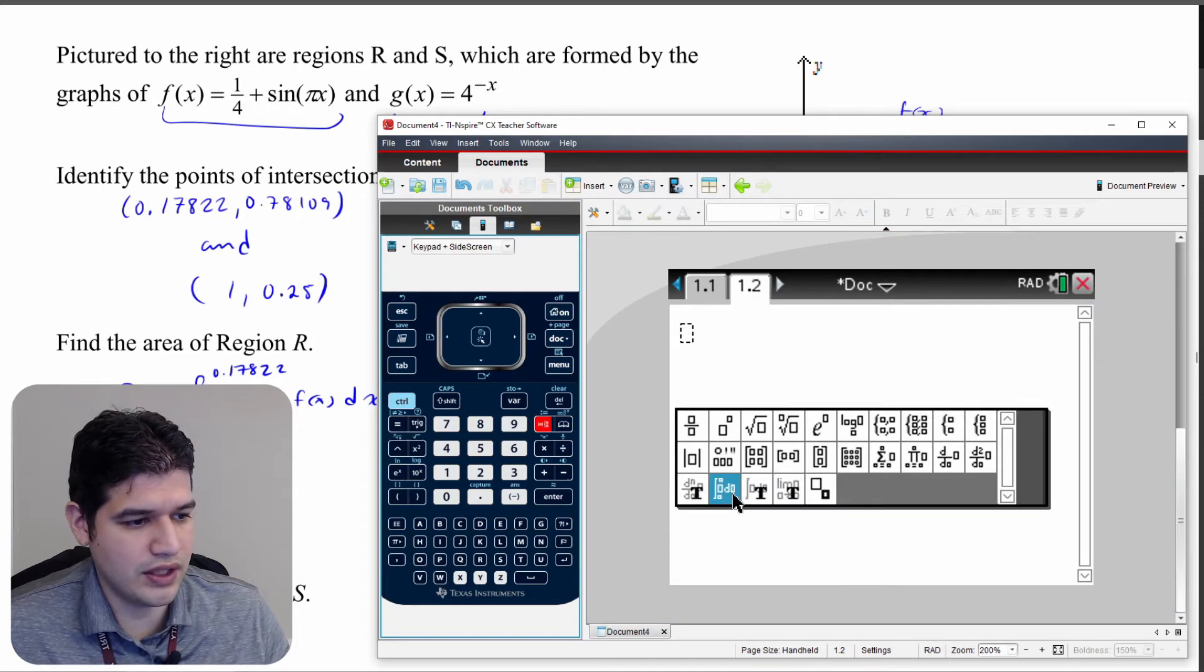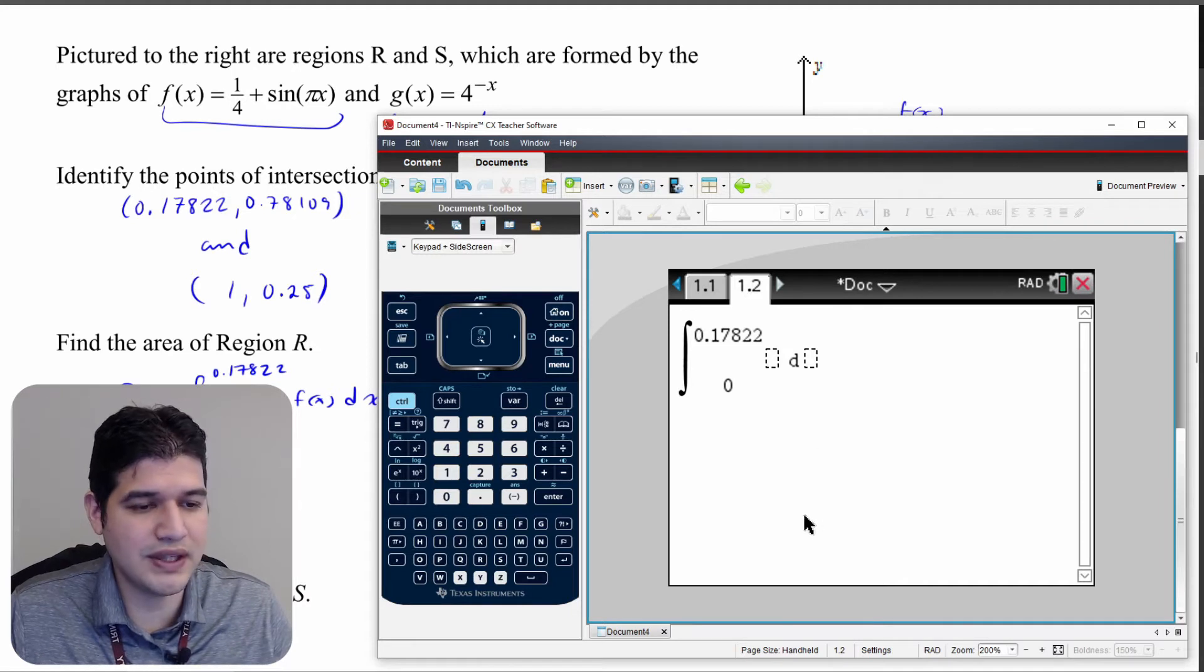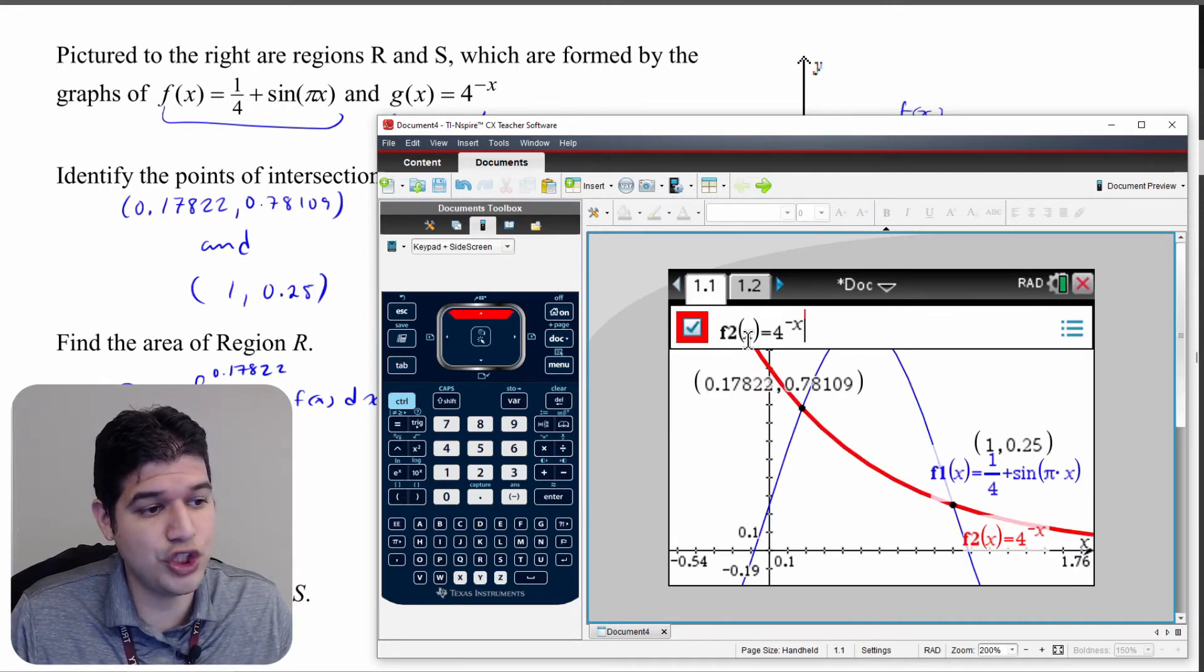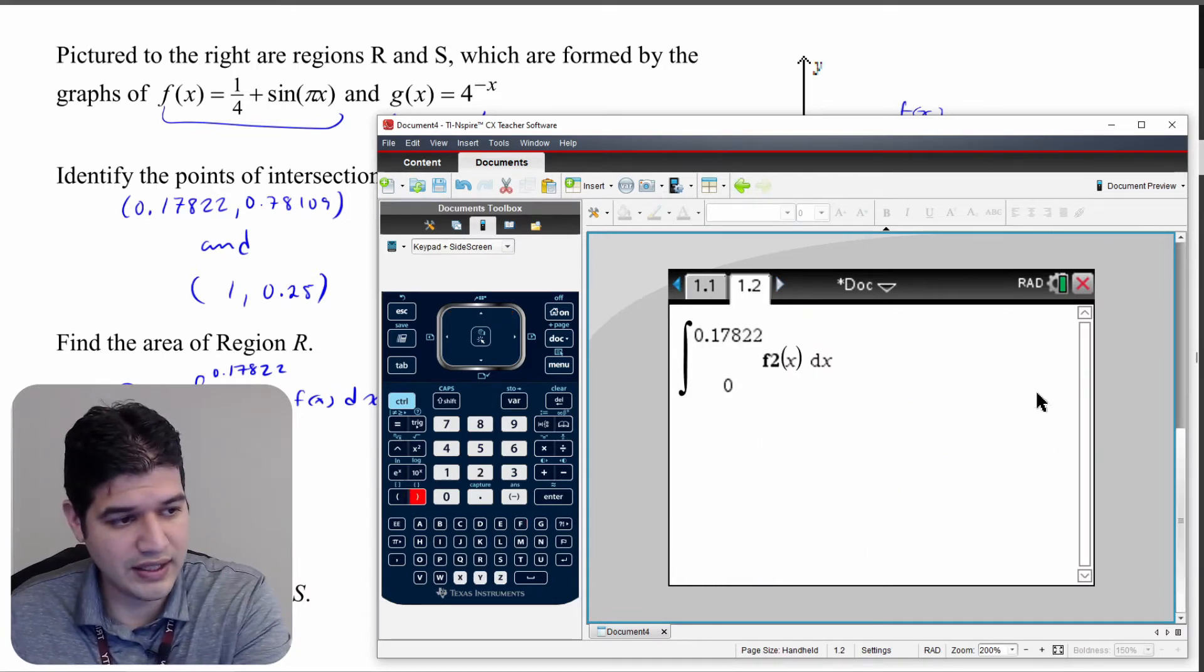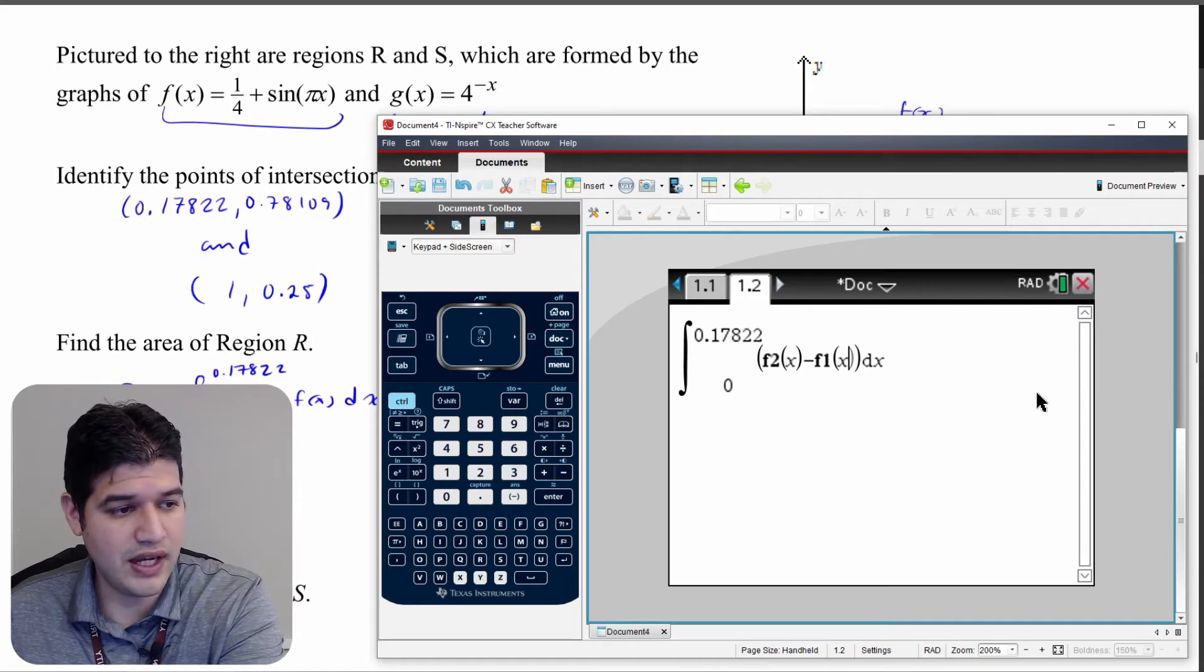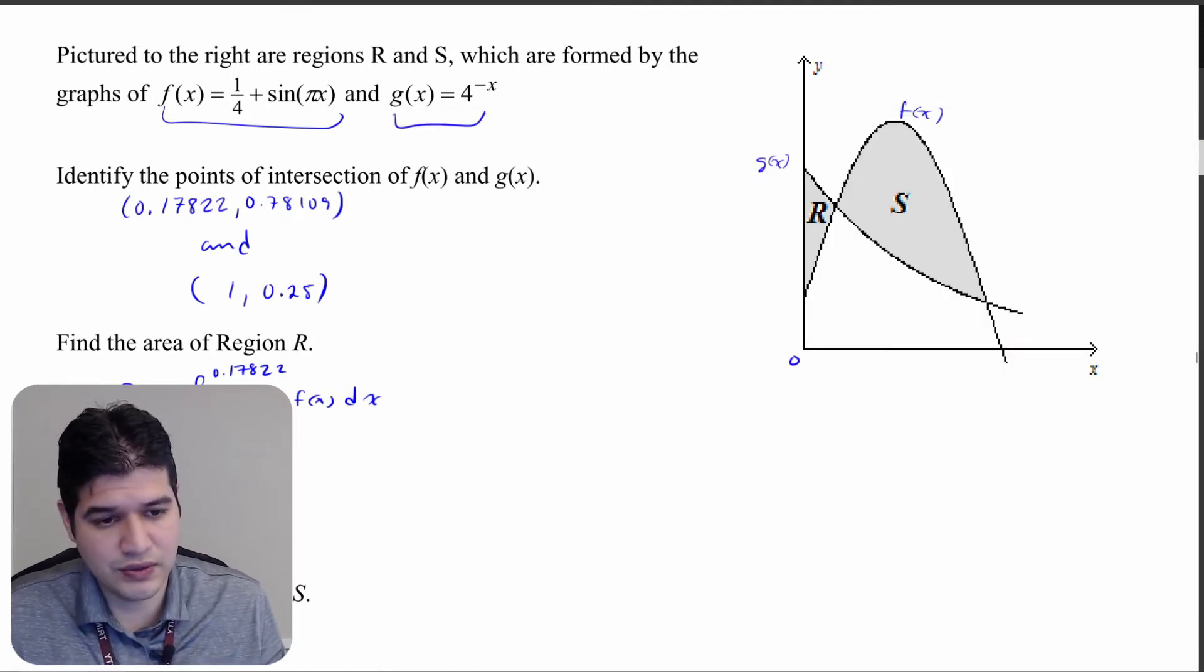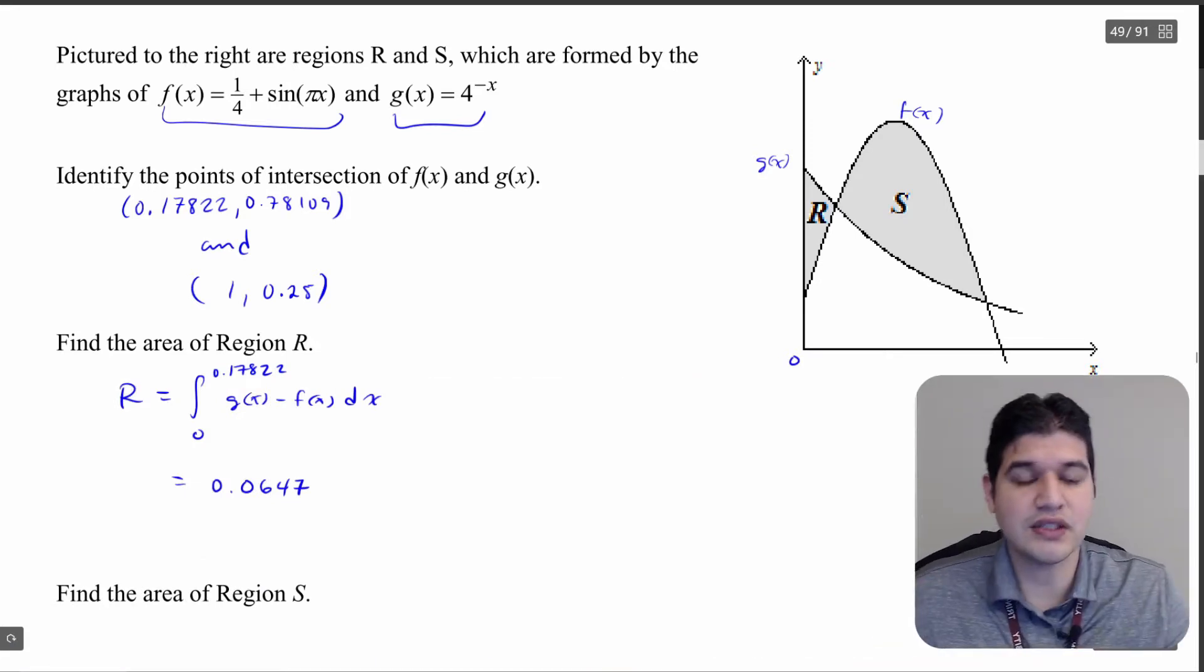What I'm going to do is I'm going to type in the integral. So the integral from 0 to 0.17822, and this is going to be dx. g of x is, if I look here at my tab, g of x is my second function f2. So notice the name f2. So I'm going to write in f2 of x minus f1 because f of x is f1, so f1 of x. And let's see how we get this answer. We put in enter and it comes out to 0.0647. And that is going to be our final answer. So we're going to get 0.0647. So that right there is going to be our final answer. We found the area of region R which is the upper function minus the lower function.